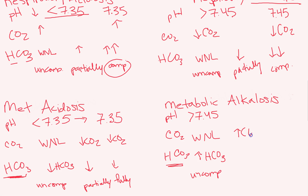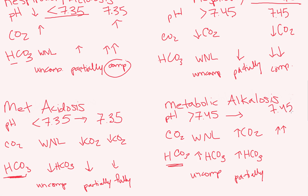So we increase our CO2 to help with our increased bicarb, but the pH doesn't respond right away — so we have a partially compensated situation. After a while, the CO2 finally brings your pH back into normal limits — barely normal, like 7.45 or 7.44 — meaning you're fully compensated metabolic alkalosis.